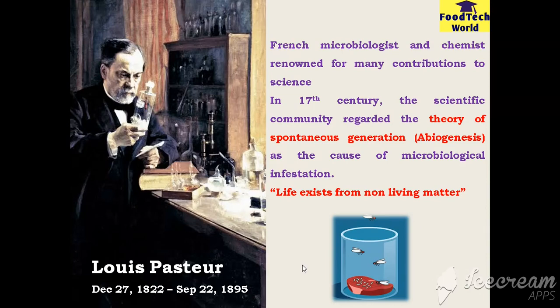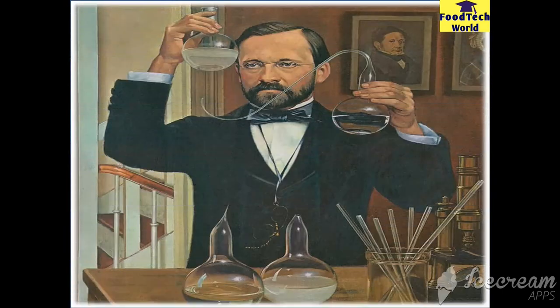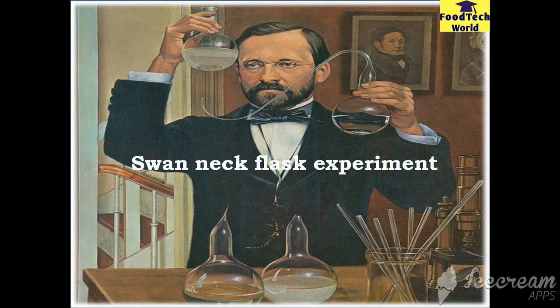But there were some scientists who did not agree with the theory of spontaneous generation. They performed many experiments to disprove it but failed to give sufficient evidence. The debate over spontaneous generation continued well into the 19th century. To settle the debate, the Paris Academy of Sciences offered a prize for resolution of the problem.